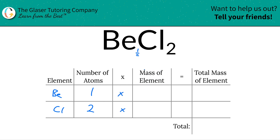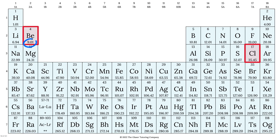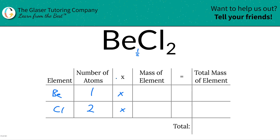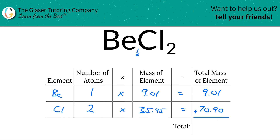Then we're going to multiply by the mass of each element, and that's where we use our periodic table. Beryllium is about 9.01, and chlorine is about 35.45. Those units would be grams per mole if you're calculating molar mass, or AMU if you're calculating molecular mass. So 1 times 9.01 gives a total mass of beryllium of 9.01, and 2 times 35.45 for chlorine gives a total of 70.90. To find the total mass of the entire compound, just add that column together, which works out to be 79.91.